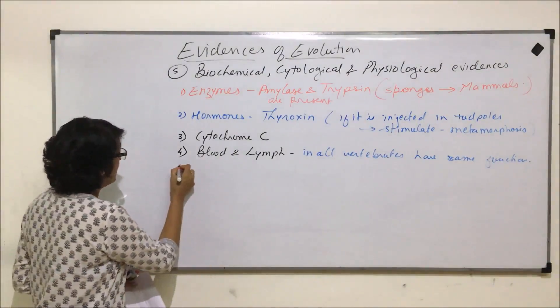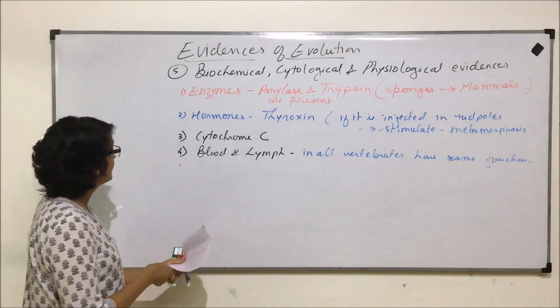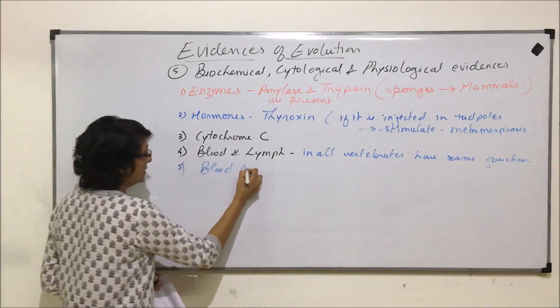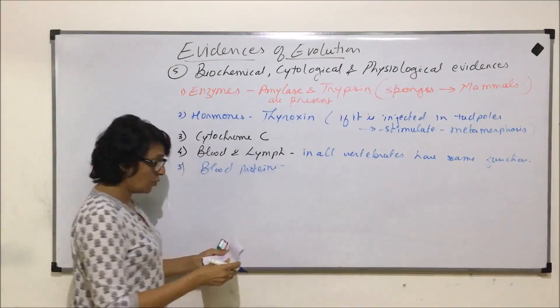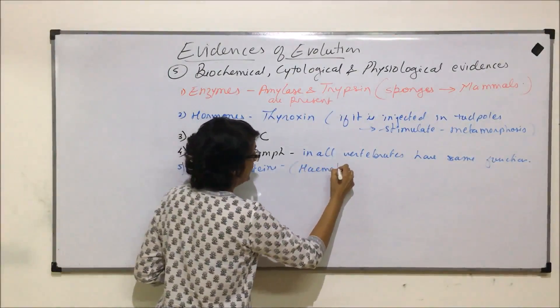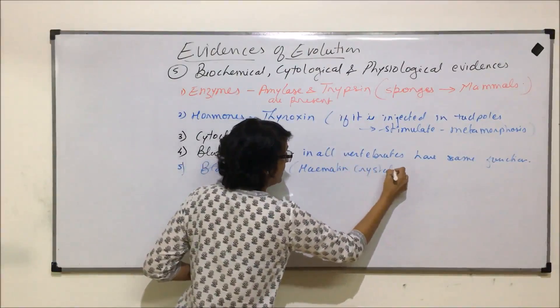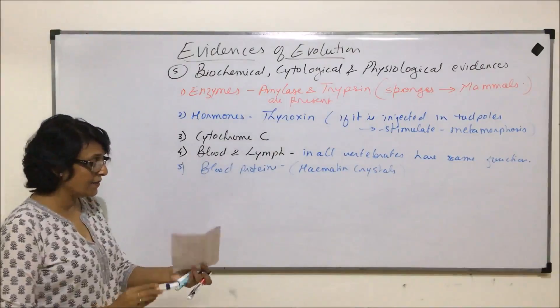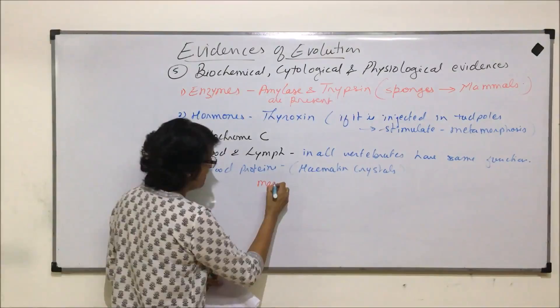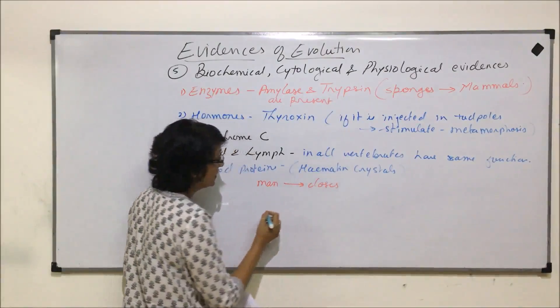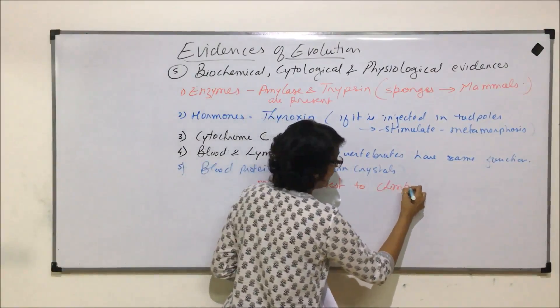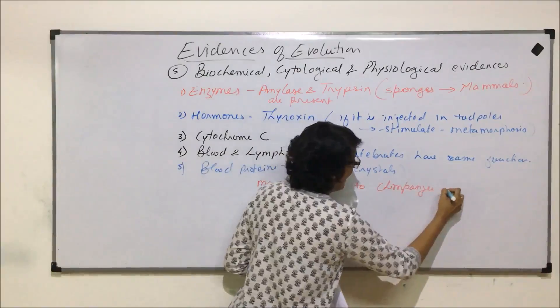Let us talk of blood proteins now. Blood proteins which are known as hematin crystals. Now when we are talking of hematin crystals or blood proteins, it has been found that humans, that is man, is closest to chimpanzees and gorillas.